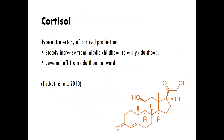Cortisol is important for us to spend a little bit of time on if we're going to really learn about trauma. We'll learn about the typical trajectory of cortisol production, which is a steady increase from middle childhood to early adulthood, and then leveling off from adulthood onward. We'll learn what happens in trauma — and it's interesting because in trauma you tend to see, believe it or not, this asymmetrical response — and we'll talk about what that means and how that plays into a person's symptomology. There's a very important longitudinal study that we'll look at to understand that.